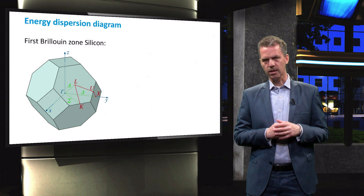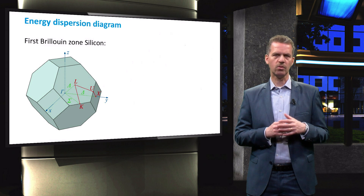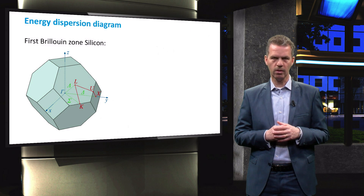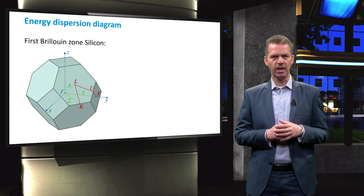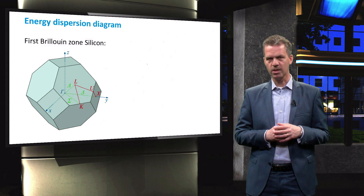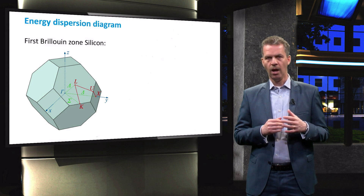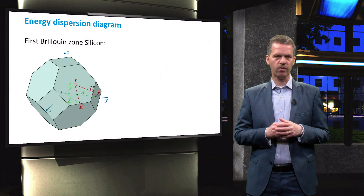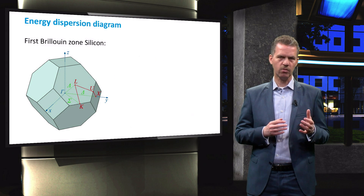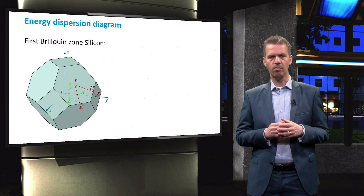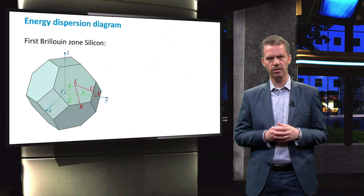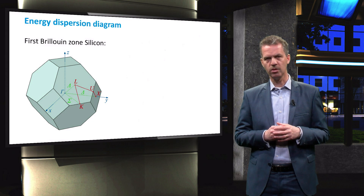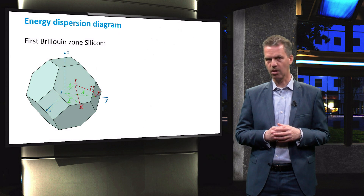In solid-state physics, it is common practice to consider the so-called reciprocal space. In reciprocal space, or k-space, the first Brillouin zone represents the unit cell as shown in this illustration. The electronic band structure of a periodic material such as crystalline silicon is obtained by finding solutions to the Bloch wave functions in the first Brillouin zone, as these solutions are proven valid for the entire medium.